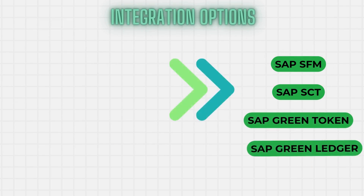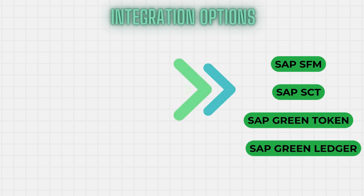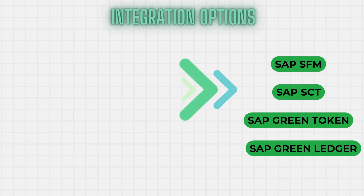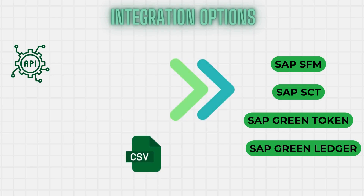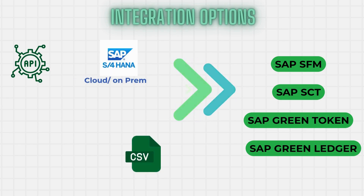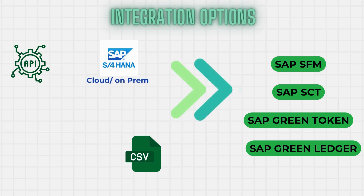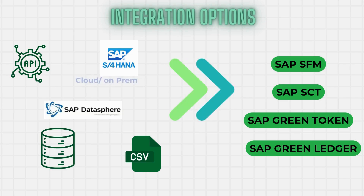Regarding integration, the SAP sustainability tools offer many options: we can connect via APIs, upload CSV files, connect to S/4HANA Cloud and On-Premises, import data from SAP DataSphere, and use OData for data transport.